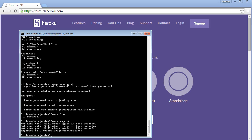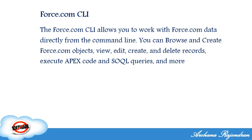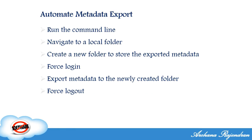Now comes the most interesting and useful part of Force.com CLI — you can automate processes and jobs using it. This is a very big advantage of the command line interface. How you automate depends on your operating system: on Windows you can use the task scheduler, and on Unix or Linux you can use cron tabs — cron jobs — to automate your jobs. In this example, I'm going to show how to create a batch file and use the task scheduler to automate CLI jobs.